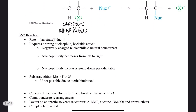SN2 reactions are bimolecular. The rate of reaction is dependent on two factors: the concentration of our substrate or alkyl halide, and the concentration of our nucleophile. Because our rate of reaction is dependent on the concentration of our nucleophile, SN2 reactions require a strong nucleophile. Also, nucleophiles in SN2 reactions will attack from the backside, which will influence stereochemistry.